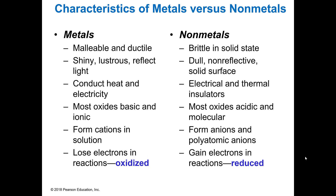Here's a quick comparison between the characteristics of metals and non-metals. Metals are malleable and ductile — you can bend them — as opposed to non-metals, which are brittle. Metals are typically shiny while non-metals are dull. Metals conduct heat, form cations, and lose electrons in oxidation-reduction reactions, whereas non-metals are insulators, most form anions or polyatomic anions, and they gain electrons in oxidation-reduction reactions.